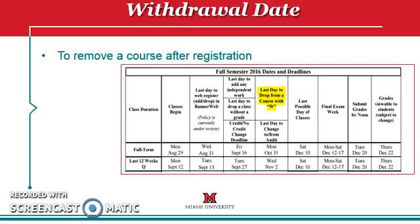If a student attends the class after the drop deadline but later decides they no longer wish to continue with the course, the student can withdraw from the course by the withdrawal date, or W deadline. Withdrawing means that you stop attending the course and a W will appear on the student's academic record. This grade is not included in the grade point average and the student does not earn credit for the course. If a student remains in the course after the W deadline, they will keep the grade they earn.